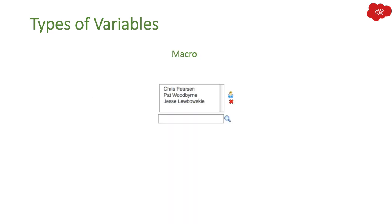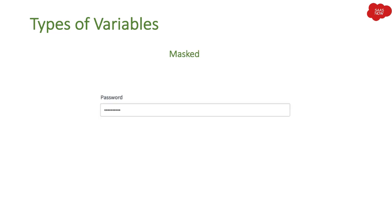Then we have Macro. If a variable type you need doesn't exist, and you want to display custom functionality to your end users, you create it with a Macro. You create UI macros and then reference them in your service catalog variable so users can see it on the catalog item form. Then we have Masked — this is used when the user has to enter a password or any encrypted value. It hides the input on screen, primarily used for passwords.